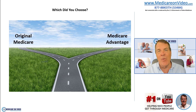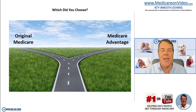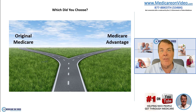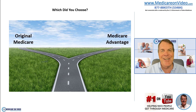The main difference: original Medicare has no network — you can go to any doctor or hospital in the country without authorization. Medicare Advantage generally has a local network of doctors and hospitals you must use. To figure out which you have, look at your ID card (not your Medicare card). If it says Medicare Advantage, that's what you have. If it says Plan F, Plan G, or Plan N, that's a Medicare supplement.